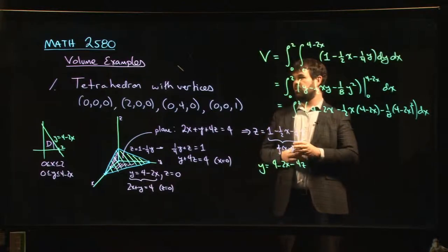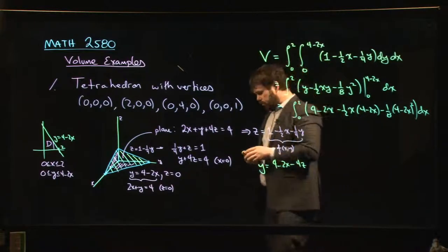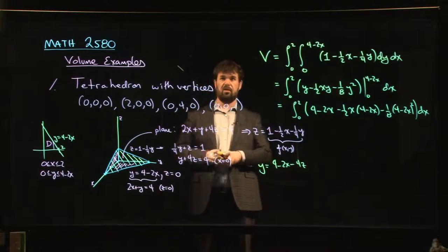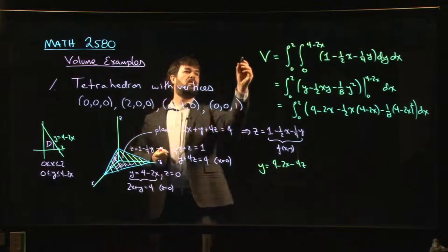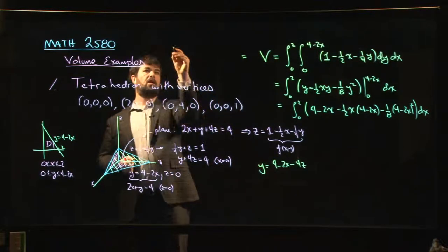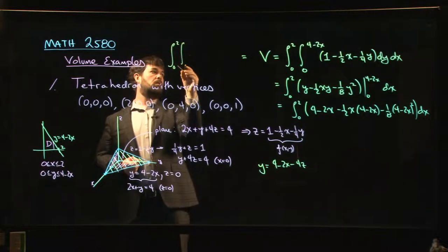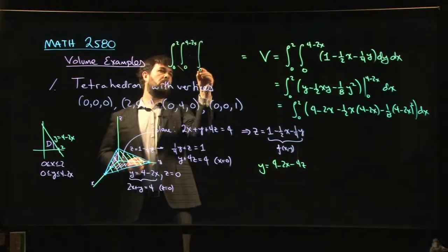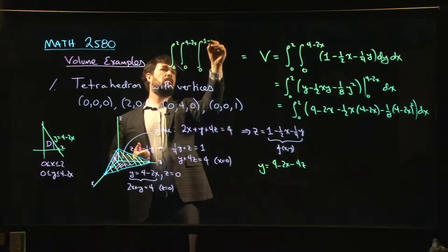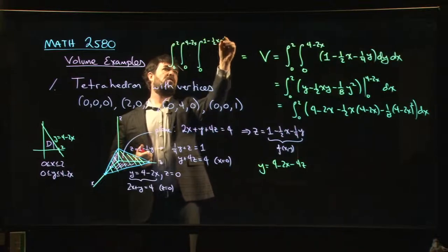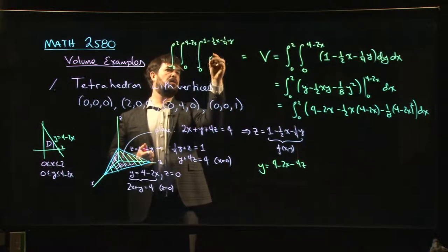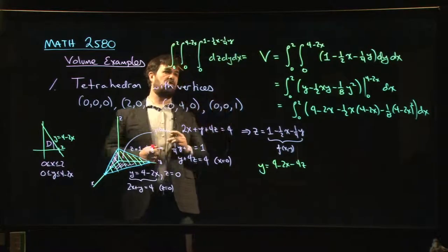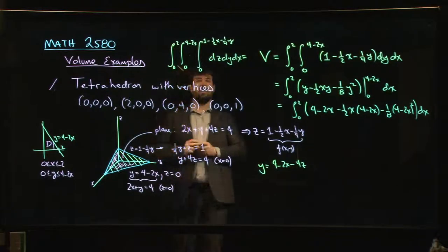And of course, the other way to think about this is if you're doing volume, in some ways what you're really doing is you're doing a triple integral. We could have thought of this because we're going to get there right away. We could have thought of this as in fact the following integral: zero to two, zero to four minus two X, zero to one minus half X minus one quarter Y, dz, dy, dx. We can think of this triple integral and we could do it that way as well.